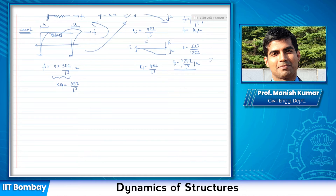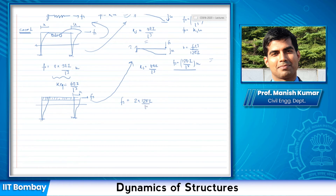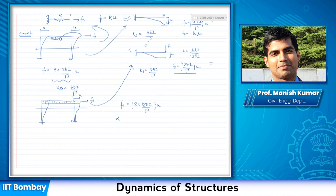Now let me go to the other extreme, in which I consider my beam to be very rigid. In case two: if it is flexurally rigid, you cannot bend it. The deformed shape would look like this — the beam moves to a new position but remains perfectly horizontal. This replicates the second cantilever case. With force Fs and displacement U, I can write Fs as two times (12EI/L³) times U, giving Ks equals 24EI/L³.